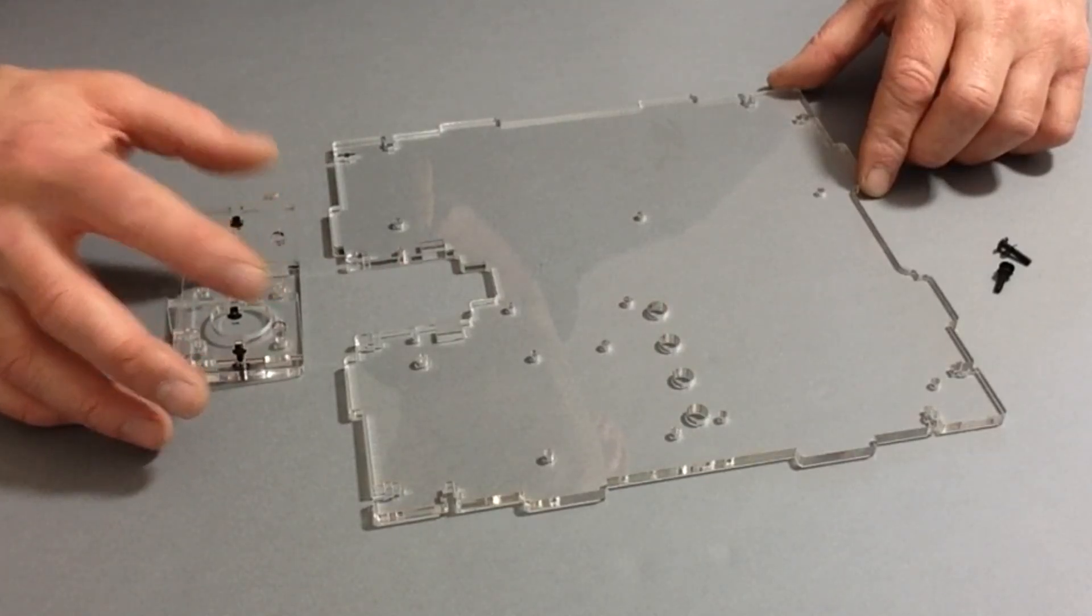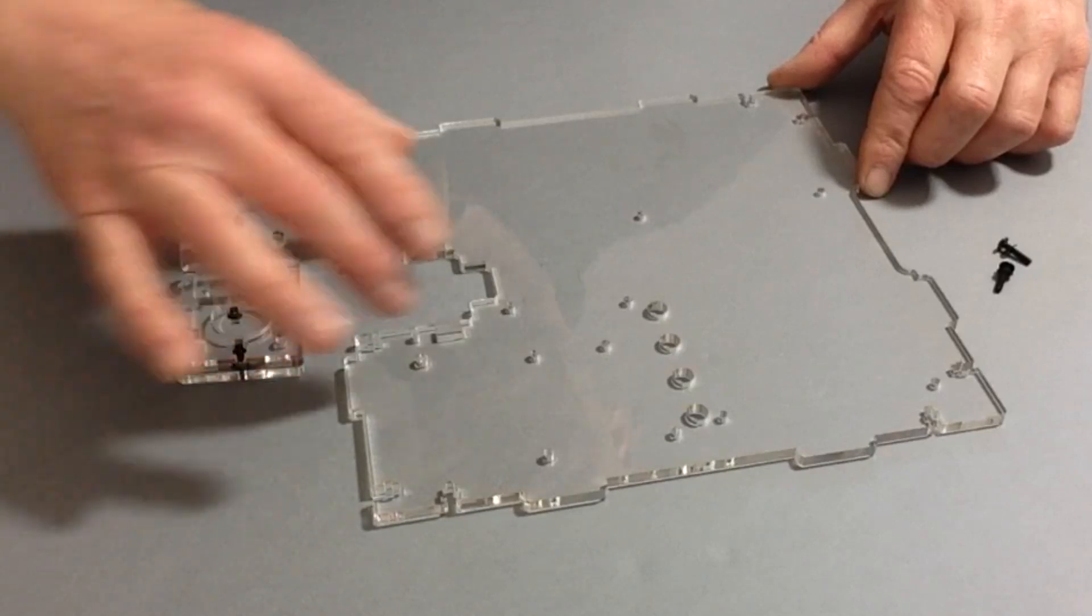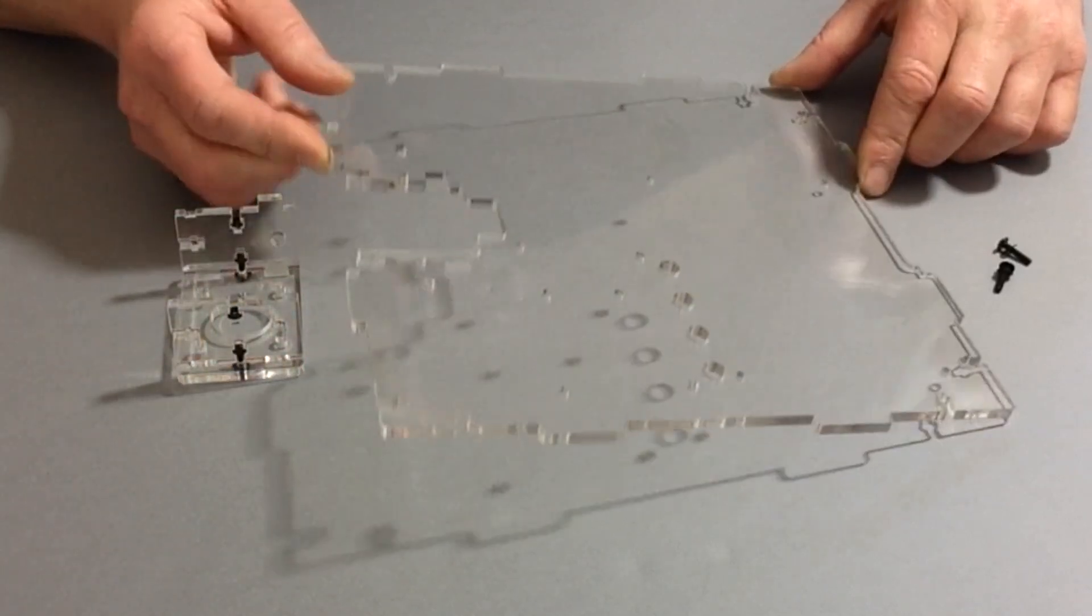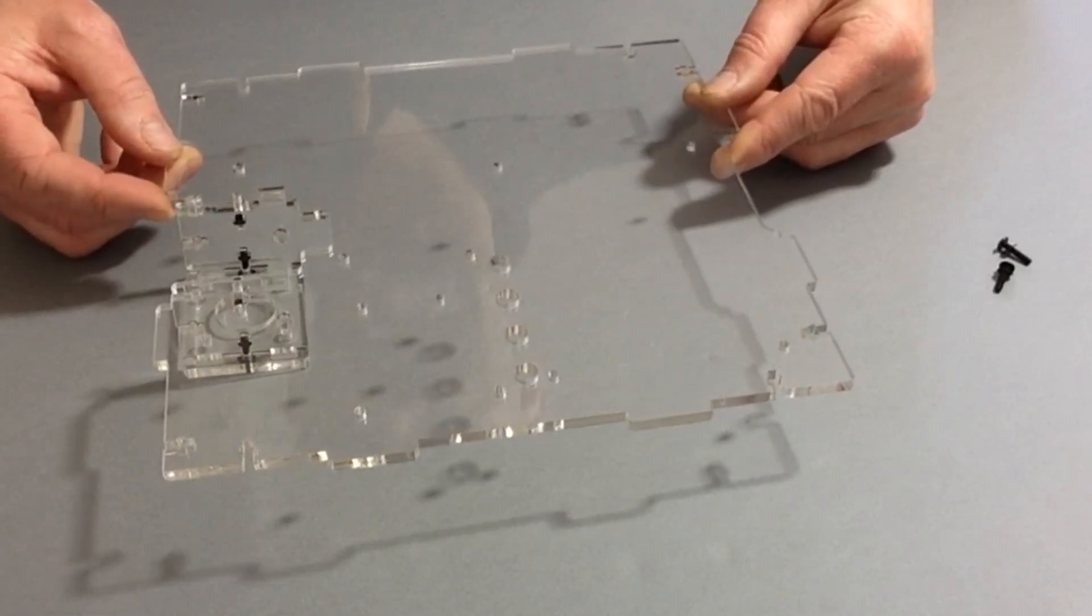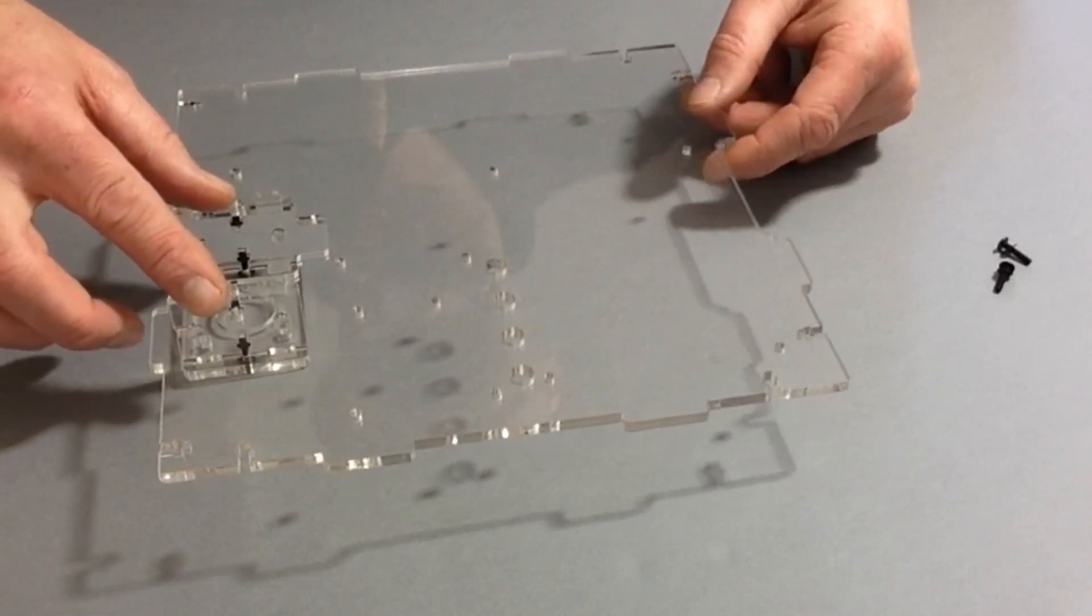You'll notice with the part that we've just made, you've got the two main tabs here, and these are going to be facing towards the bottom plate. What I'm going to do is lift the bottom plate on top of the section that we've just done.